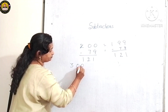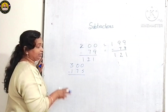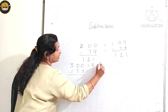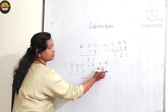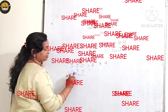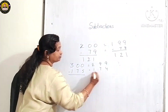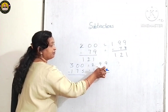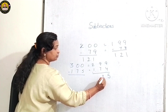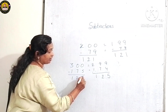Suppose I take 300 minus 175. As I told you, write the predecessor of 300, which is 299 — two zeros, two nines, predecessor of 3 is 2. The predecessor of 175 is 174. Subtract: 9 minus 4 is 5, 9 minus 7 is 2, 2 minus 1 is 1. The final answer is 125.